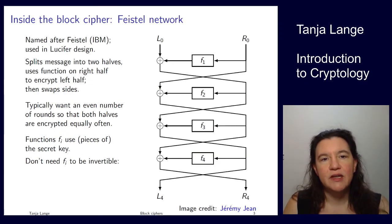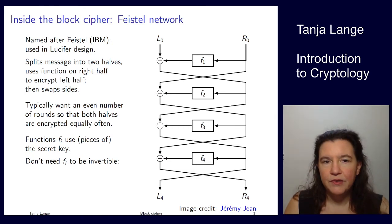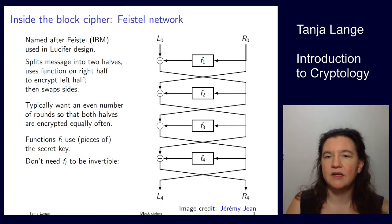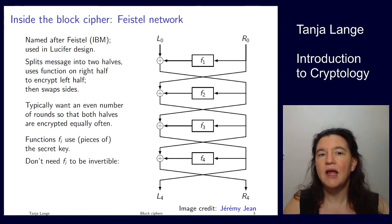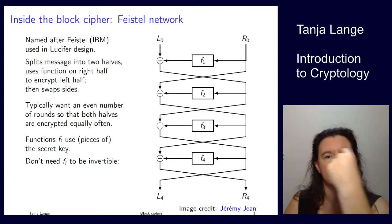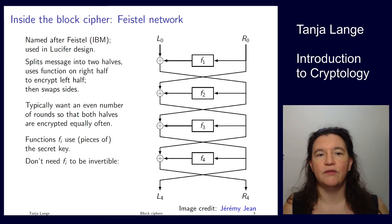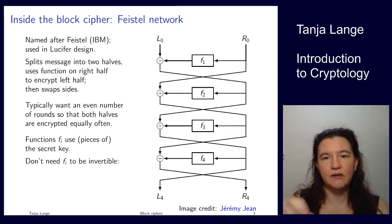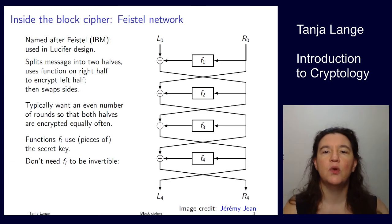Now let's look at one very famous case: the Feistel network. Feistel was a researcher in the 1950s through 70s who worked for IBM after working for the US government. He designed what is now known as the Feistel network. You get n bits in at the top and n bits out at the bottom, and in between there are functions f that take the right half as input and add it to the left half. These functions f1 through f4 also use parts of the secret key.